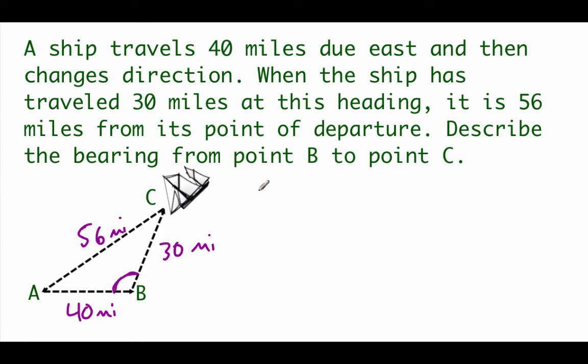So what we're looking for is we're going to need this angle B in our picture to help us out. So we're going to use our law of cosines formula that says cosine of angle B equals that A value, 30 squared, plus that C value, 40 squared, minus our B value, 56 squared, all over 2 times that A value times our C value.